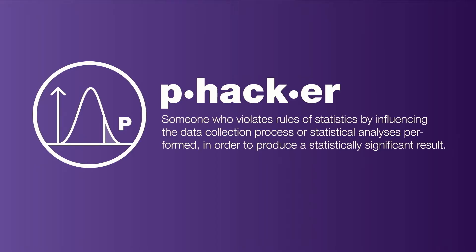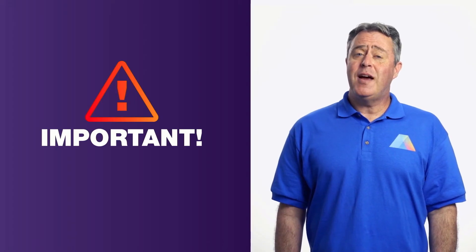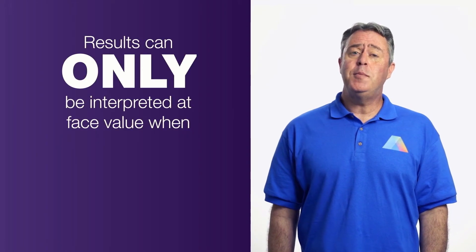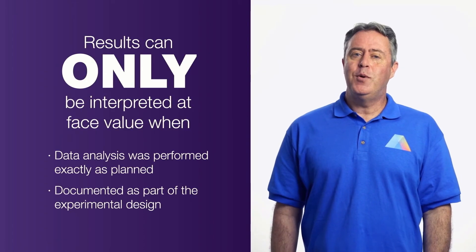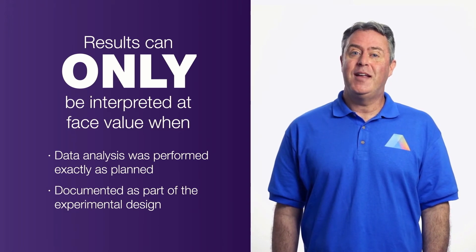A p-hacker is someone who violates rules of statistics by influencing the data collection process or statistical analyses performed in order to produce a statistically significant result. Unfortunately, this occurs quite frequently, although you may not even realize it's happening. This topic is important — if not critical — for all researchers. Statistical results can only be interpreted at face value when every choice in the data analysis was performed exactly as planned and documented as part of the experimental design.